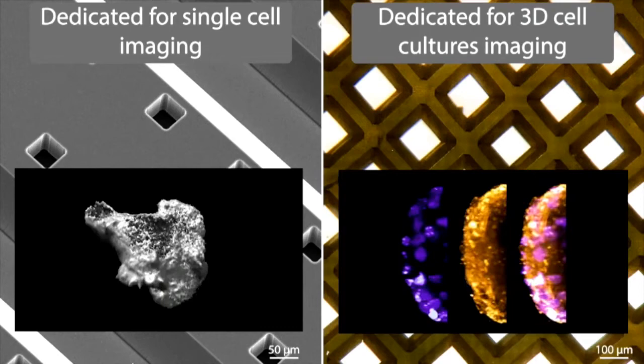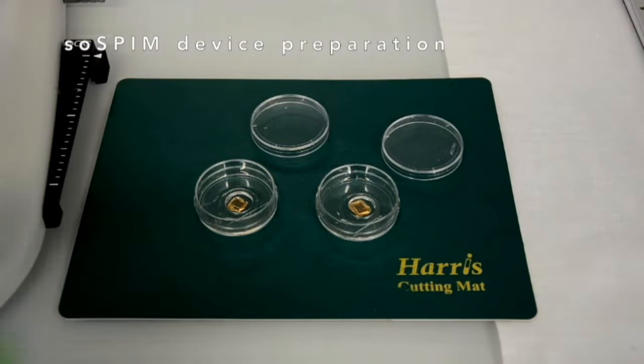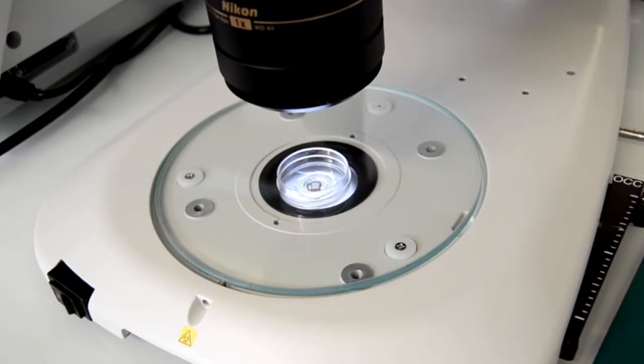First, we need to prepare our device which will host our samples and possibly functionalize it depending on our culture protocol. We just choose the device adapted to the samples we want to use. These devices are usually directly mounted onto a bottom-free petri dish. In our case, we chose a device displaying G-wells with a depth of about 100 micrometers and a top opening of 100 micrometers to culture spheroids.